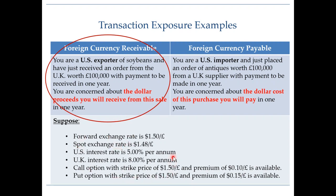We will work with a simple numerical example. Assume the forward exchange rate is $1.50 per pound. Right now the spot exchange rate is $1.48 per pound. The interest rate in the US is 5% per year and 8% in the UK. Call and put options are available on pounds. A call option has a strike price of $1.50, giving the right to buy pounds at $1.50, with a premium of $0.10 per pound. A put option also has a strike price of $1.50, allowing you to sell pounds at $1.50 but not obligating you to, with a premium of $0.15 per pound.